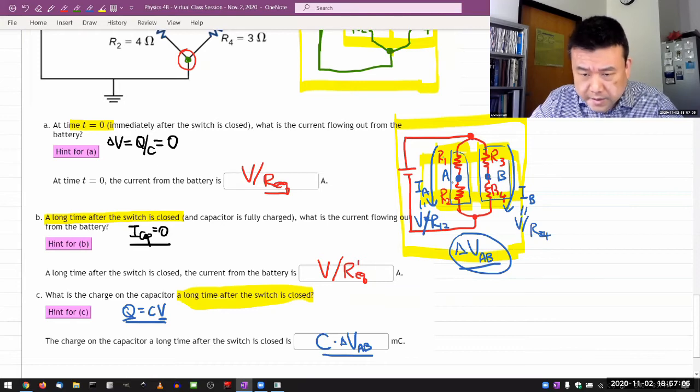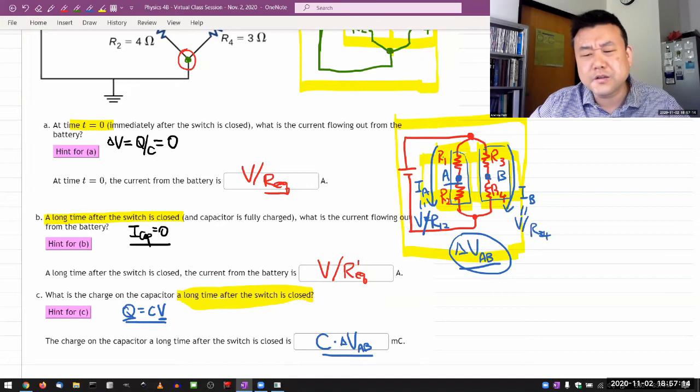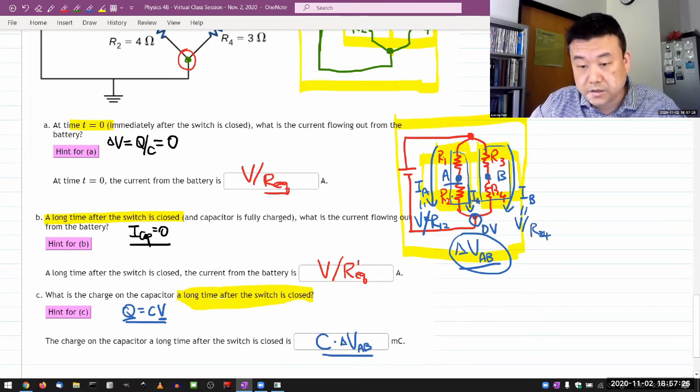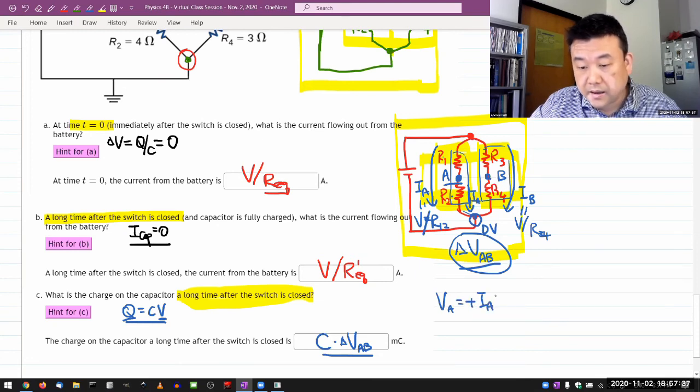Once you have those currents, then to get the voltage at A, the easiest way to do it is using Ohm's law. So you have this current IA that's flowing through this resistor. You know it's going to reach this point that has voltage zero volts. So you can imagine moving from this point to this point. You are going to get a rise of plus IAR2. So the voltage at A is going to be plus IAR2.